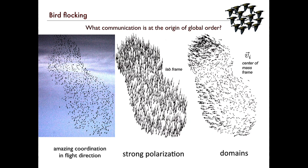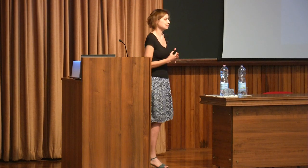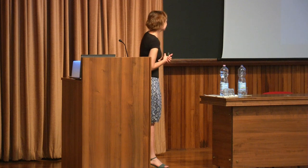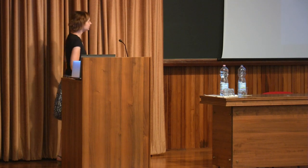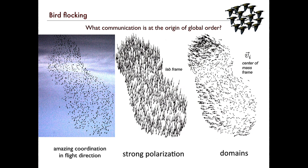These are starlings — very non-exotic birds that do these amazing things. We're going to move to the picture of the center of mass velocities where we see clearly global order: the whole flock behaves in one way, and how does that come about?